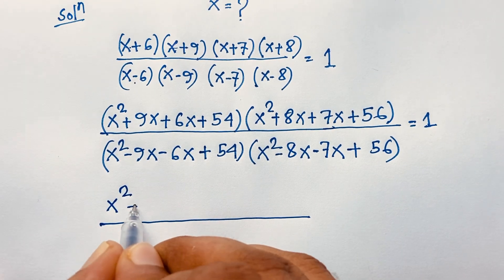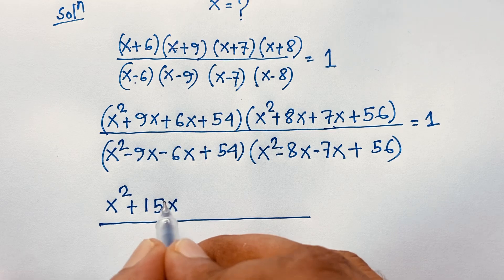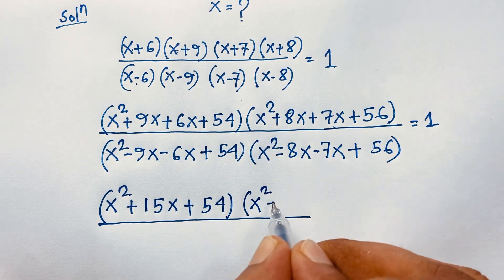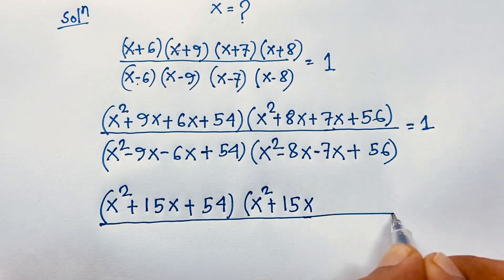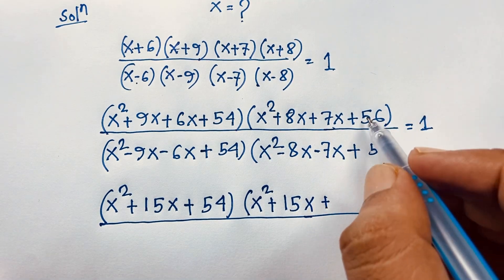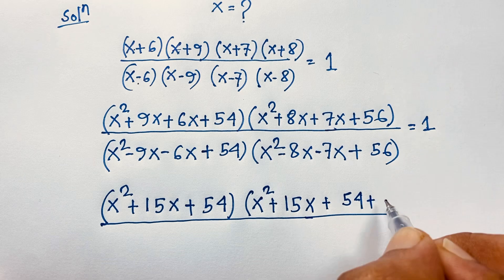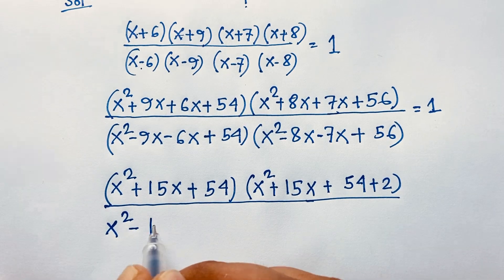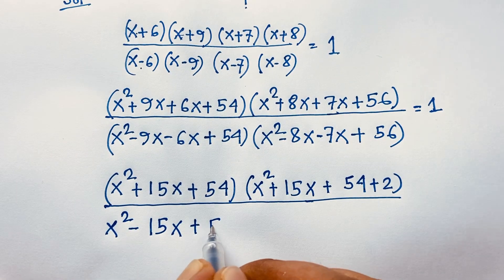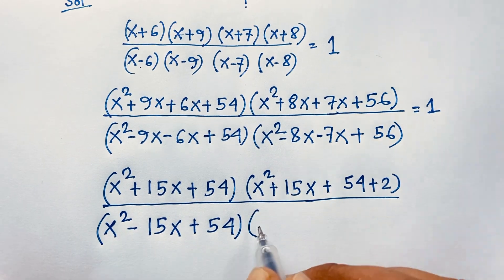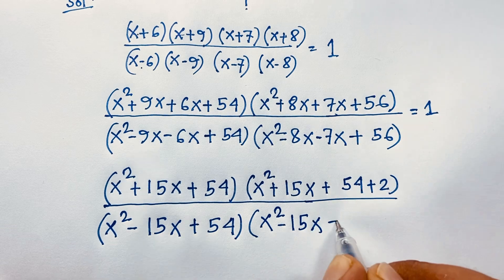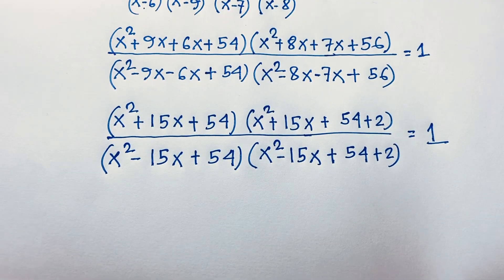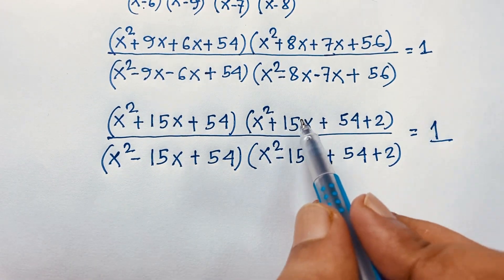Adding within each pair: the numerator first bracket becomes x² + 15x + 54, and the second bracket becomes x² + 15x + 56. Note that 56 = 54 + 2. Similarly, the denominator first bracket is x² - 15x + 54, and the second is x² - 15x + 56, which is also 54 + 2, all equal to 1.